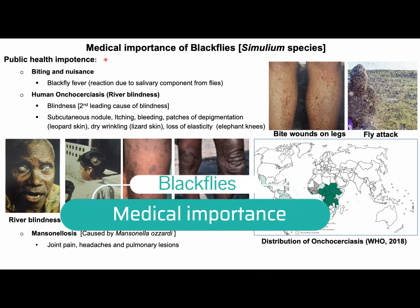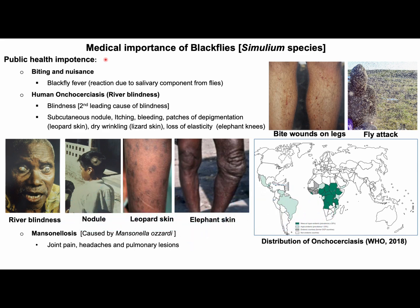Medical importance of black flies: black flies have roles as pest as well as vector for the transmission of different pathogens. Biting of black flies causes black fly fever due to reaction to various salivary components from flies. The main human disease agent transmitted by black flies is onchocerciasis or river blindness, caused by Onchocerca volvulus, which is a nematode. This parasite is transmitted to humans by the repeated bites of black flies. Onchocerciasis is distributed mostly in the tropics of sub-Saharan Africa, and also exists in Brazil and Venezuela in Latin America, and Yemen on the Arabian Peninsula.